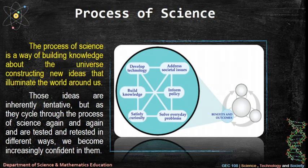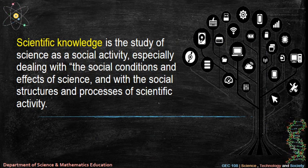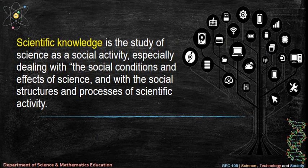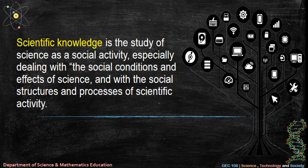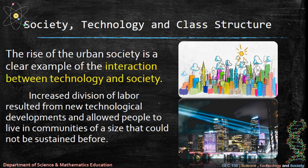Scientific knowledge is the study of science as a social activity, especially dealing with the social conditions and effects of science, and with the social structures and processes of scientific activity — including society, technology, and class structure.